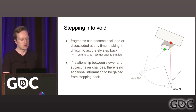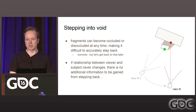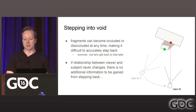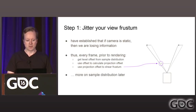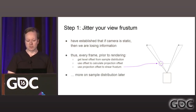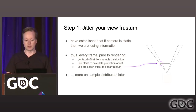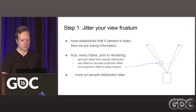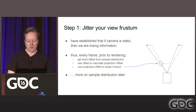Additionally, if we don't have any change in the relationship between the viewer and the subject, then we don't gain any extra information from stepping back in time — there's no variance. So step one: jitter your view frustum. If your camera is static and you have a static scene, you are effectively losing information. So every frame prior to rendering, pick some offset from a sample distribution and use this offset to shear your view frustum. I'll get back to sample distributions later — they are super important.